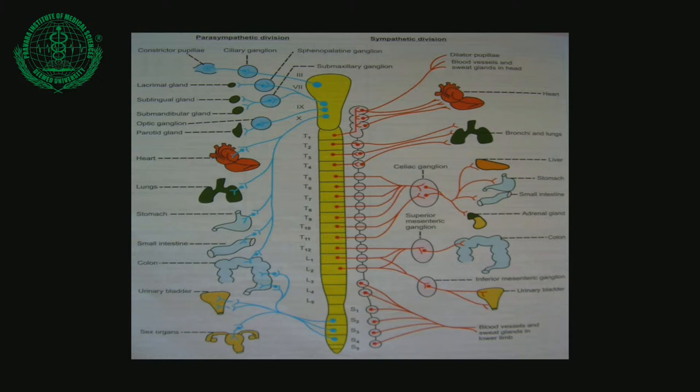The Inferior Cervical Ganglia is formed by the fusion of the seventh and eighth cervical ganglia. The first thoracic ganglia fuses with the inferior cervical ganglia, forming the Stellate Ganglia. It receives pre-ganglionic fibers from the T1 segment and sends post-ganglionic fibers to the heart through the inferior cervical cardiac plexus. Post-ganglionic fibers also arise from the plexus around the subclavian artery and its branches.